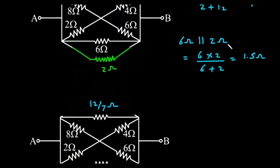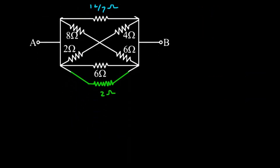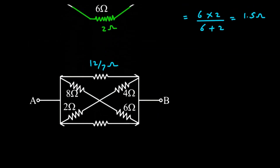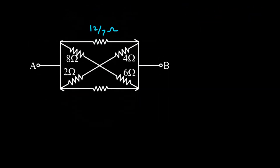And this 6 Ohm parallel with 2 Ohm will be replaced by 1.5 Ohm, so it will be replaced by 1.5 Ohm.